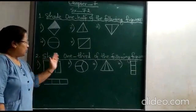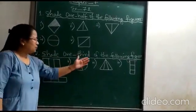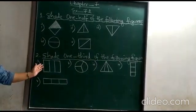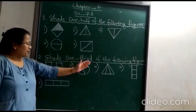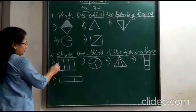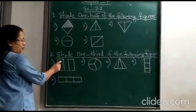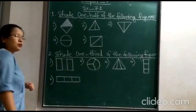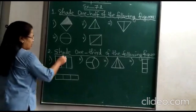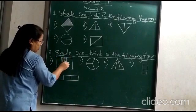Number two: shade one-third of the following figures. Again, five pictures are given. I will do number one for you, and two, three, four, five will be for your practice. This is a rectangle shape. It is divided into three parts — one, two, three. You have to shade one portion. I will shade the middle part for you.